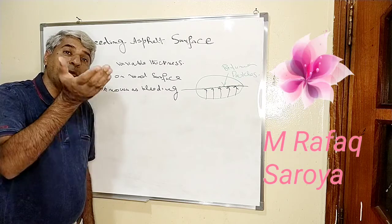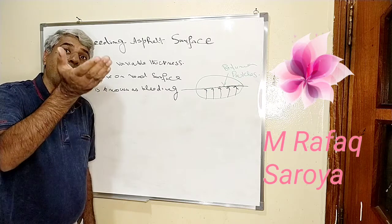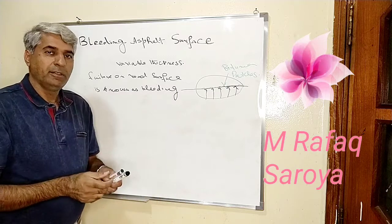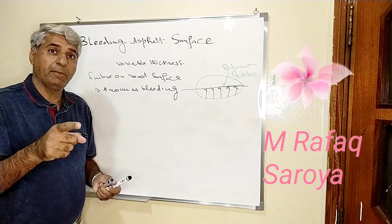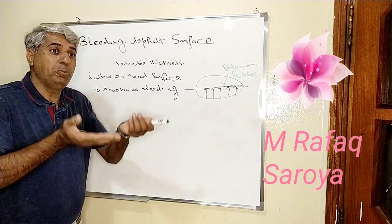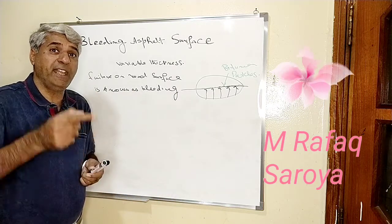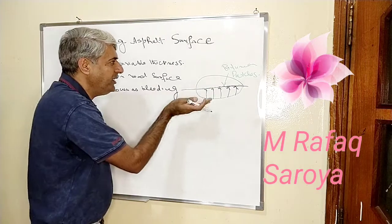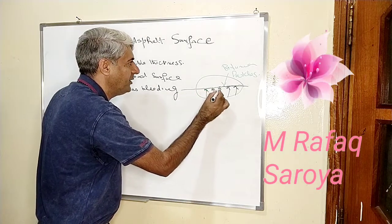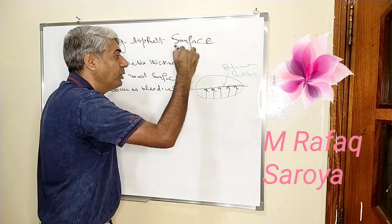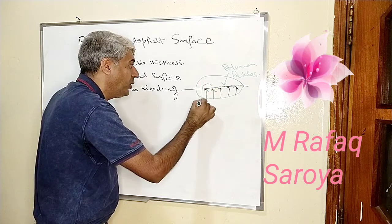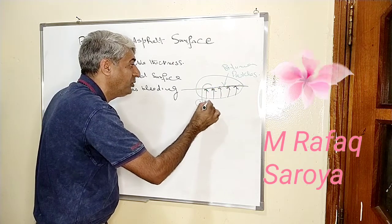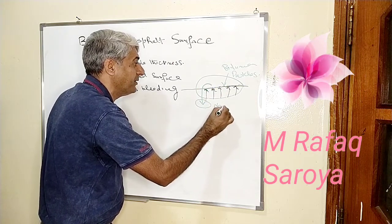When the amount of bitumen keeps increasing on the road surface, it is not going down. This bitumen is increasing on the road surface and it is not going down. You can see the arrow is in the upward direction — it is going to the surface, not going down. When it does not go down, it is non-reversible.